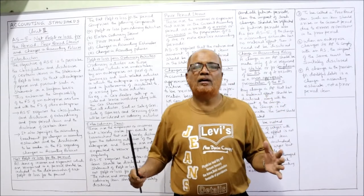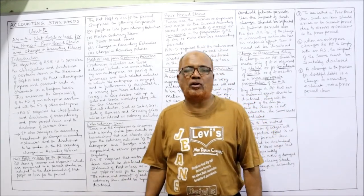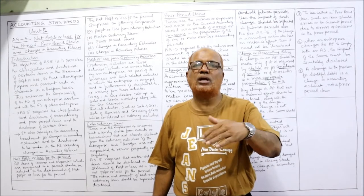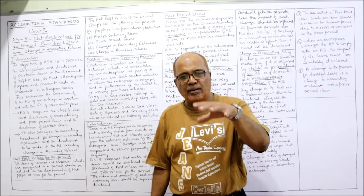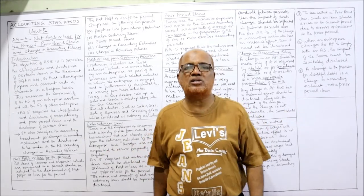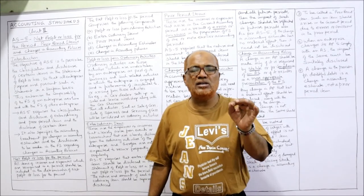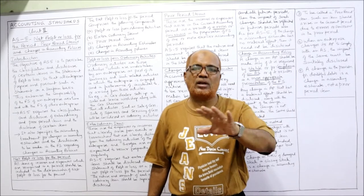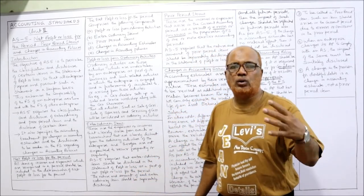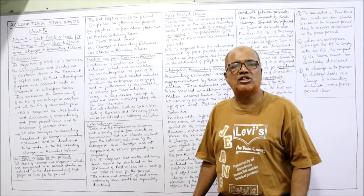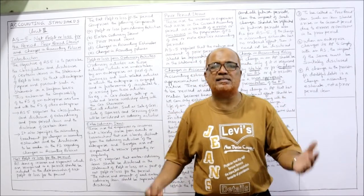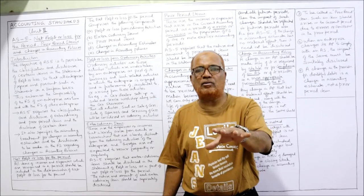One objective is to make comparison of the statement of profit or loss possible. This comparison is only possible when the presentation and disclosure are the same in all organizations and within the same organization from one year to another. If the classification and treatment is the same across all organizations, we can easily compare it. This accounting standard shows how to classify and disclose certain items in the statement of profit or loss, enhancing comparability.